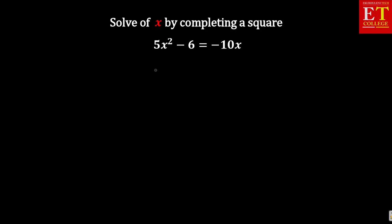The next question says: solve for x by completing a square. The problem given is similar to the one we had previously, but the interesting part is there is now an equal sign. Whenever there is an equal sign, it makes things much better and easier. Whatever you do on the left-hand side, you do on the right-hand side. You must still arrange the problem as ax squared plus bx plus c.